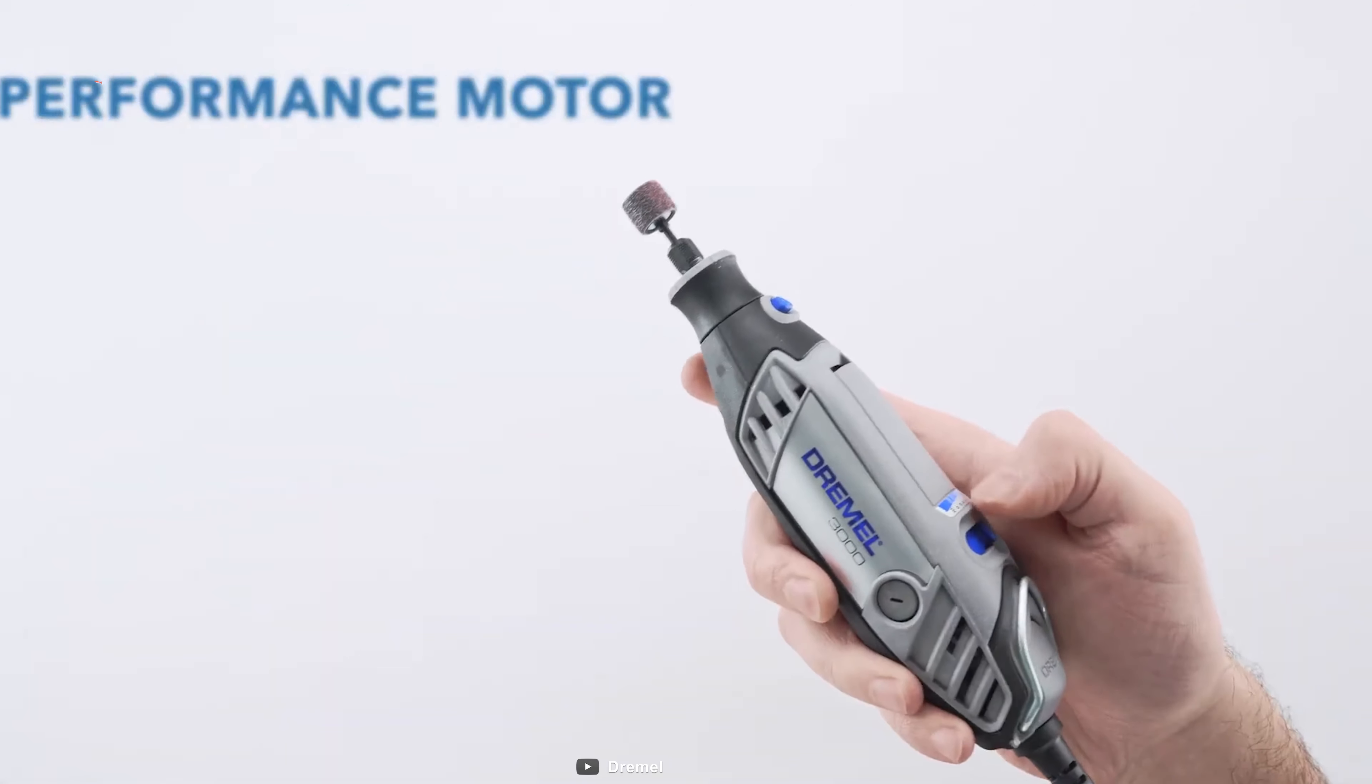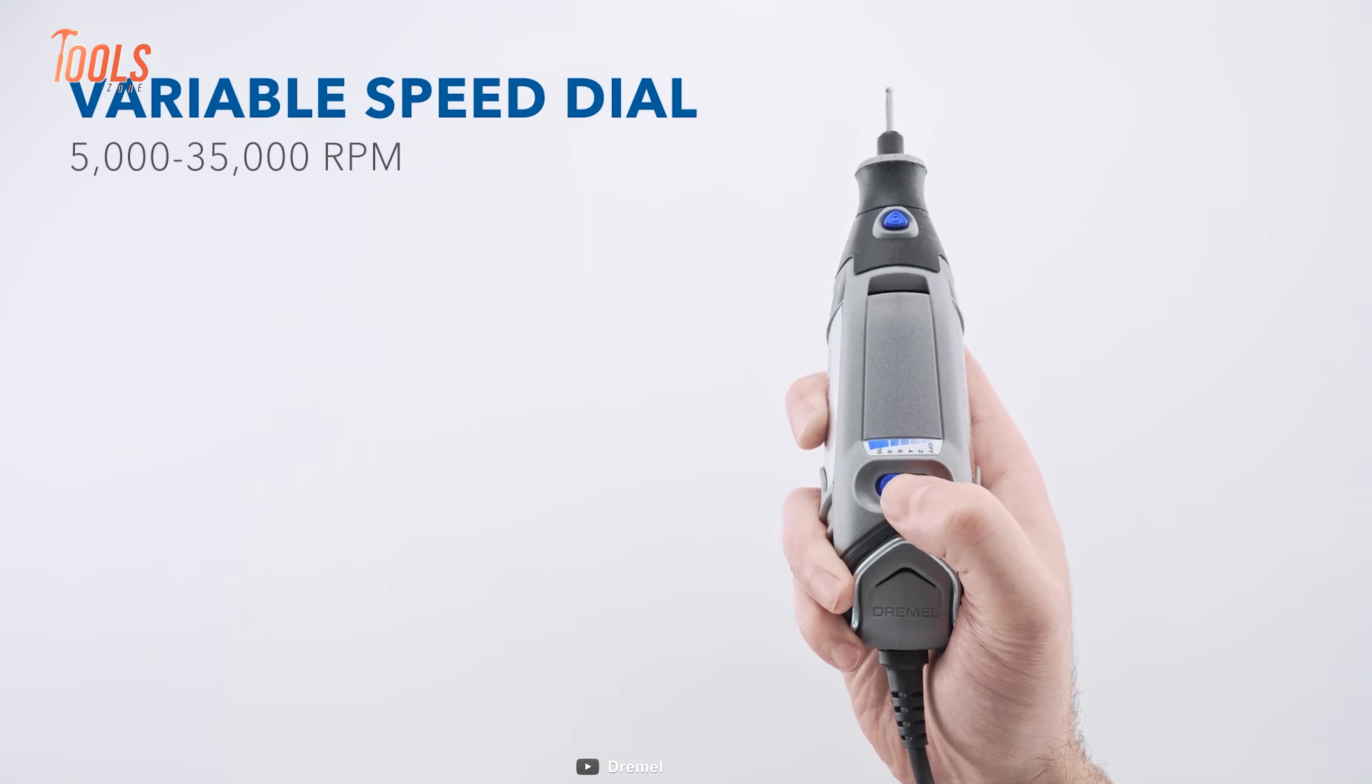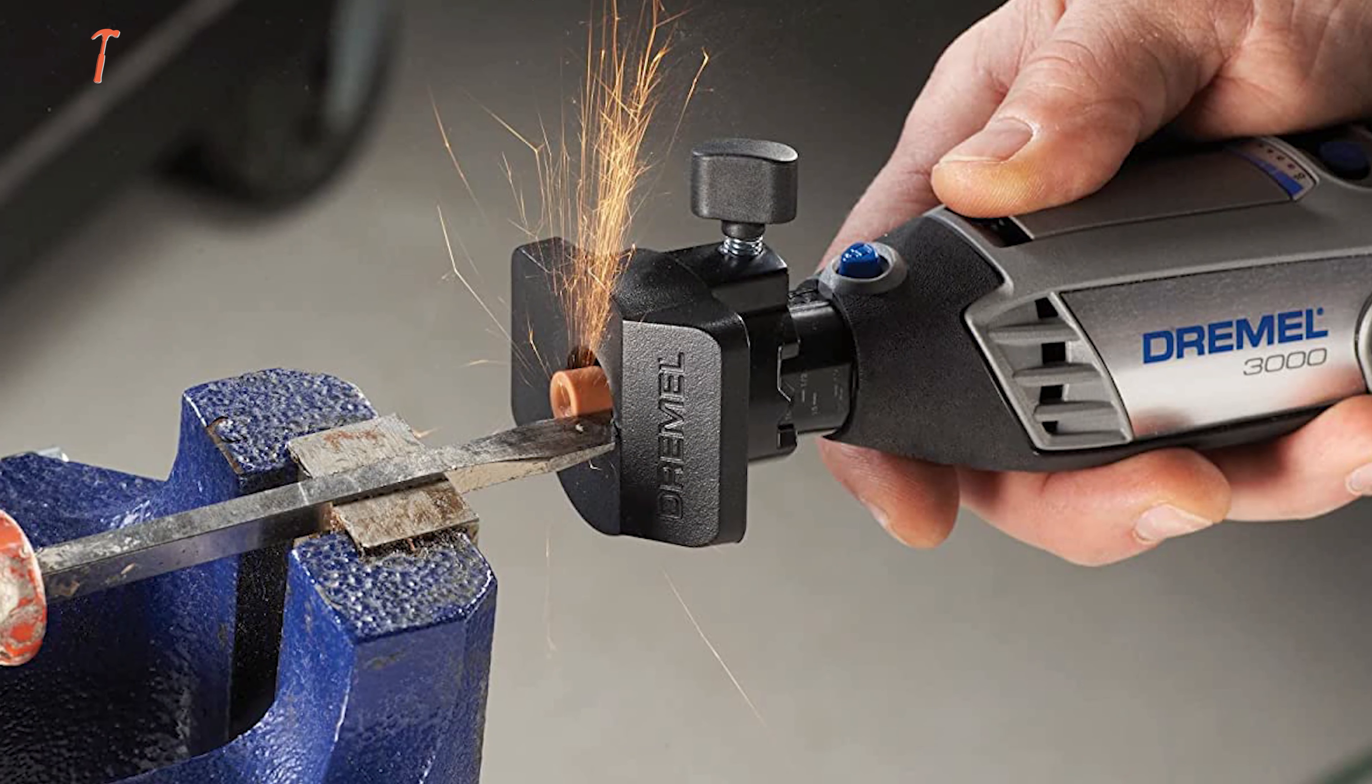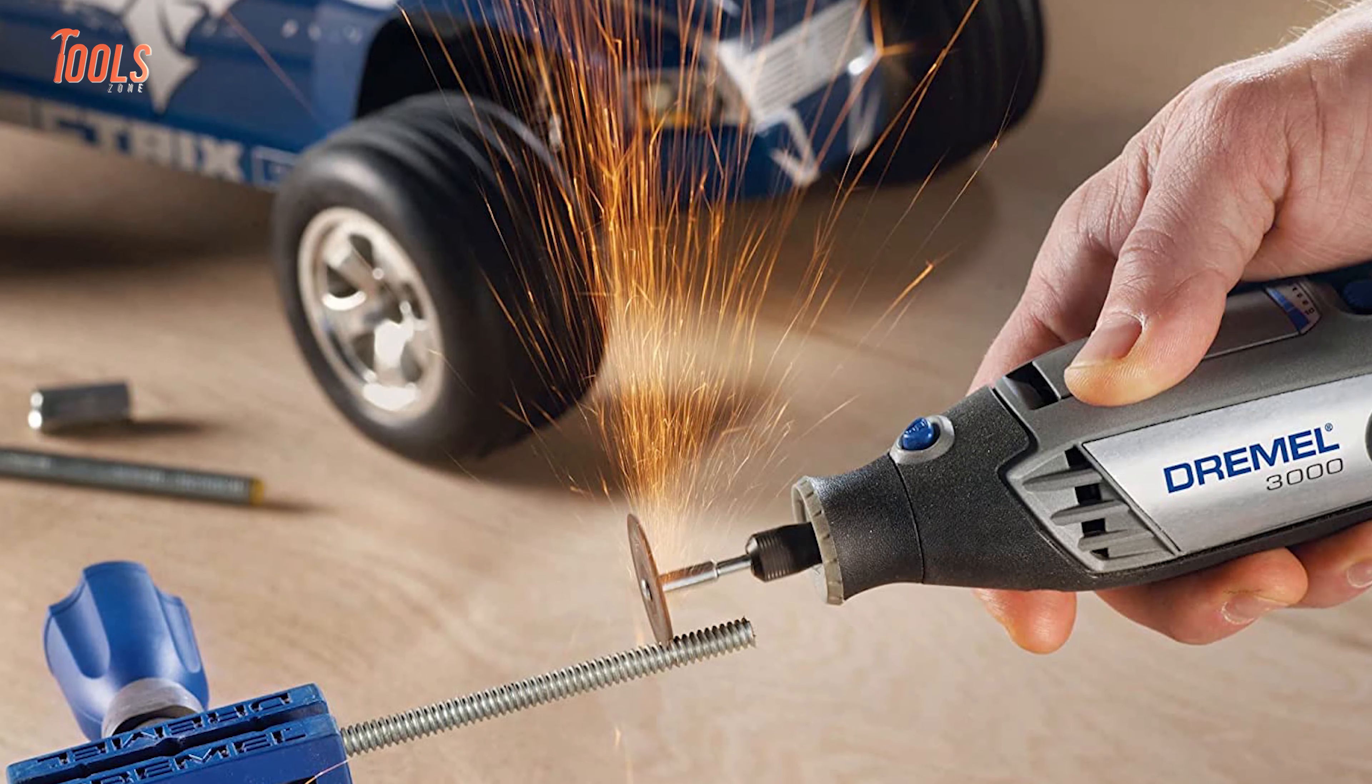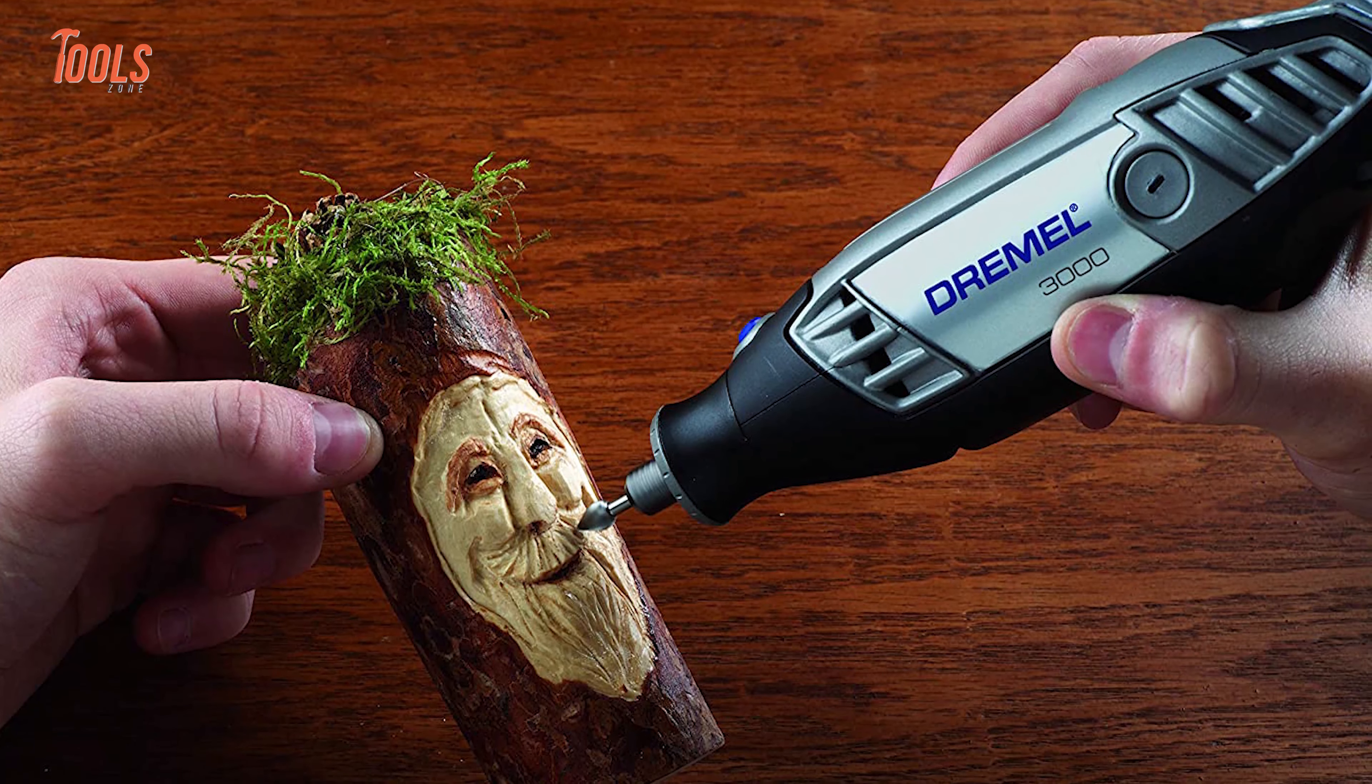Unleash your creativity with the Dremel 3000 variable speed rotary tool. This versatile yet powerful rotary tool helps you with all your DIY or crafting projects. With its high performance 1.2 amp motor and 6 variable speeds ranging from 5000 to 35,000 rpm, you'll have maximum power and precise tool control for any project. Most importantly, it features an innovative airflow system that prevents heat buildup for smoother, cooler and quieter operation. It means working for extended periods is no longer a pain.